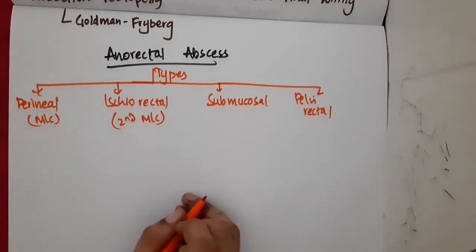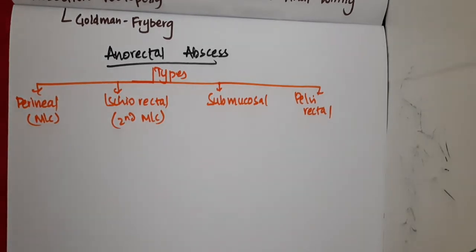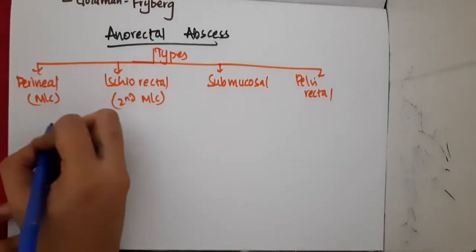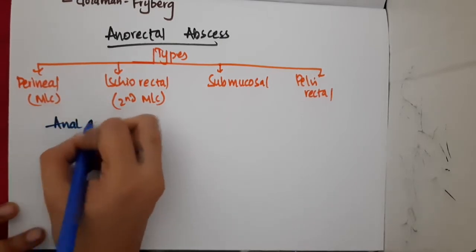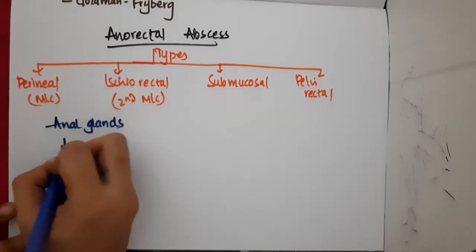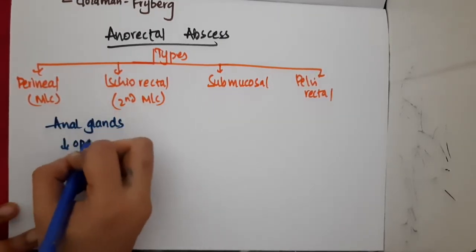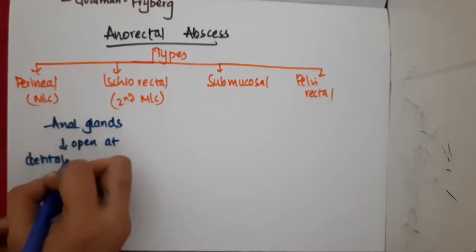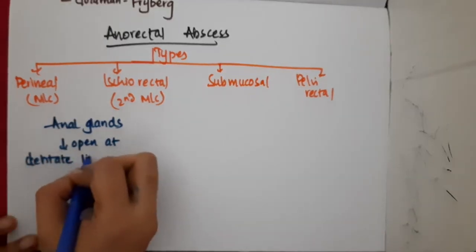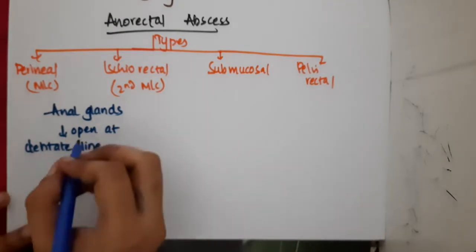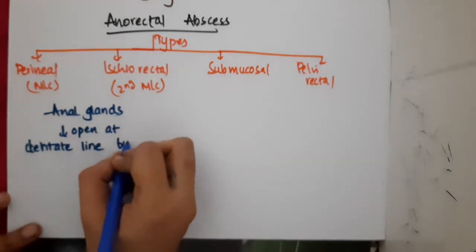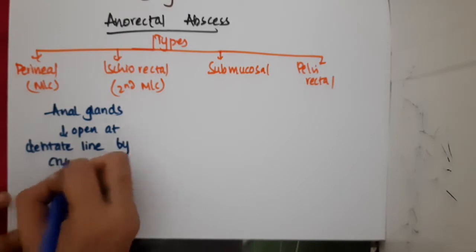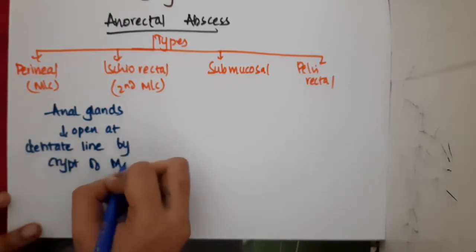Now, how is anorectal abscess formed? The anal glands mainly open at the dentate line in the anus. This opening of the anal glands at the dentate line is called the crypt of Morgagni.